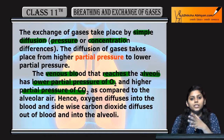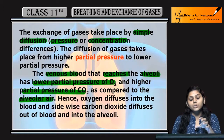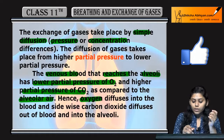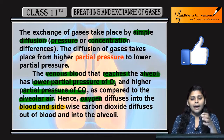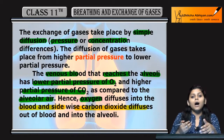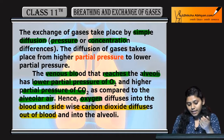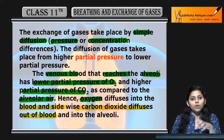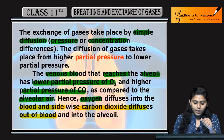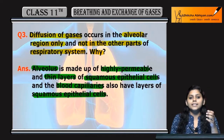So movement goes from higher partial pressure to lower partial pressure, as compared to the alveolar air. Therefore, oxygen diffuses into the blood, and simultaneously carbon dioxide diffuses out of the blood into the alveoli. So oxygen diffuses into the blood and carbon dioxide diffuses out of the blood — that is how gaseous exchange occurs.